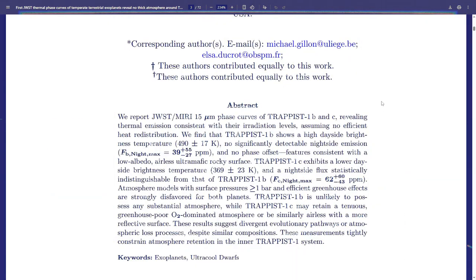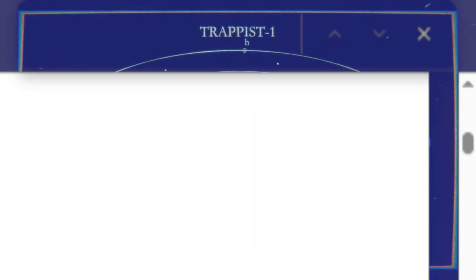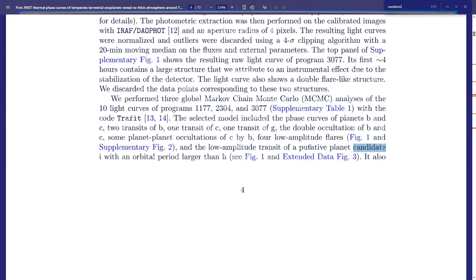So here's what I'm going to do. Ctrl F, Candidate. Low amplitude transit of a putative planet Candidate I with an orbital period larger than H. I assume that means not really confirmed? When? When was this a thing? Did we just find this now?